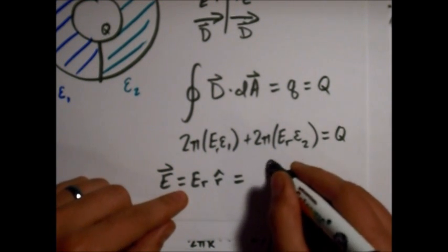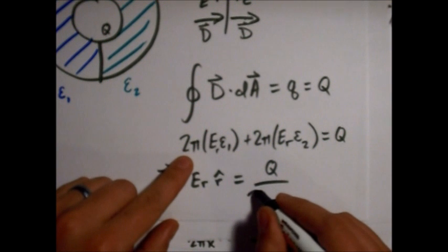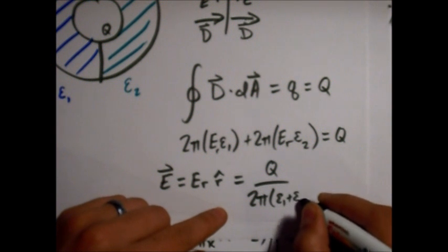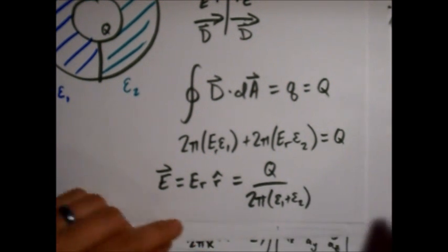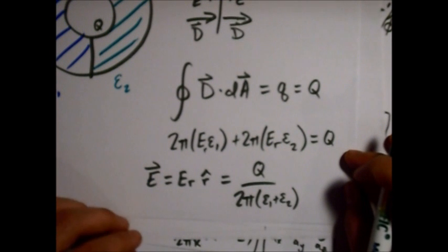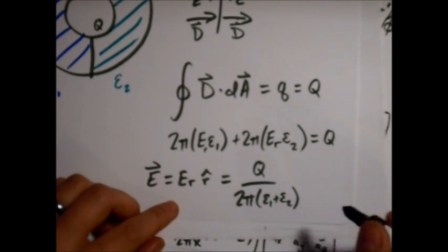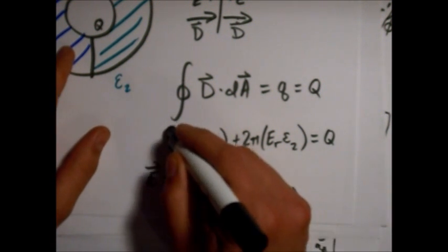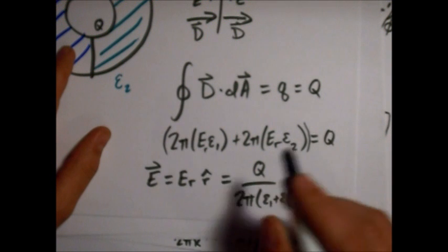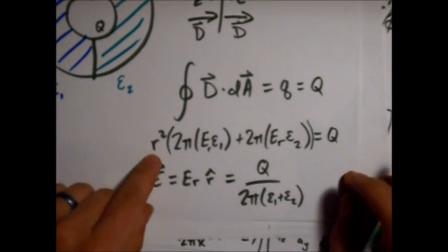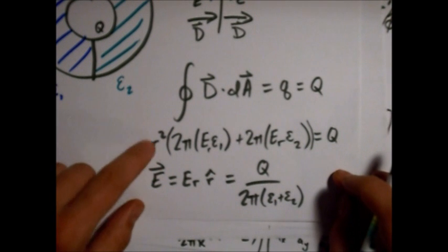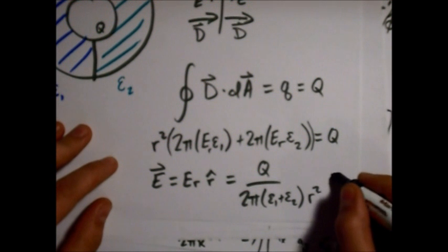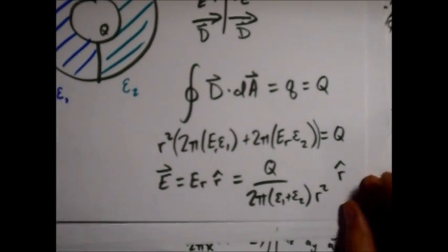So we have Q over 2 pi epsilon 1 plus epsilon 2. And let's see, oh yeah, I forgot to have the, this is all an R squared here, because we need units for our area, right? Okay, so there's an R squared here, good, that's what we expected. Again, in the R hat direction.